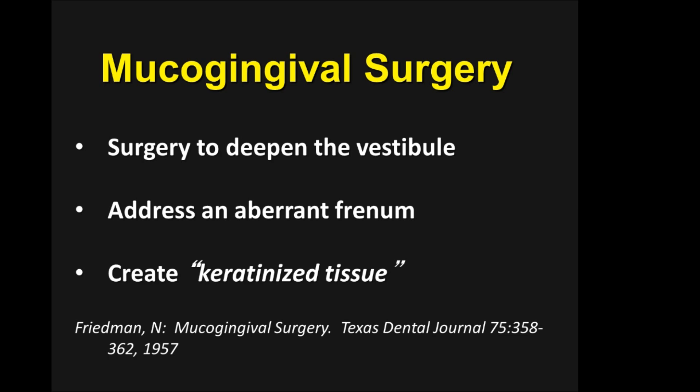Creating keratinized tissue — note that is in quotation marks. In the 1950s, the dunization or pushback procedure was in vogue. This is actually scar tissue: vast areas of mucosa were removed, leaving bone exposed to granulate over with tissue that functioned like keratinized tissue. This was a painful, slow healing process and bone was lost, but you got zero pocket depth and the scar tissue did function as keratinized tissue.